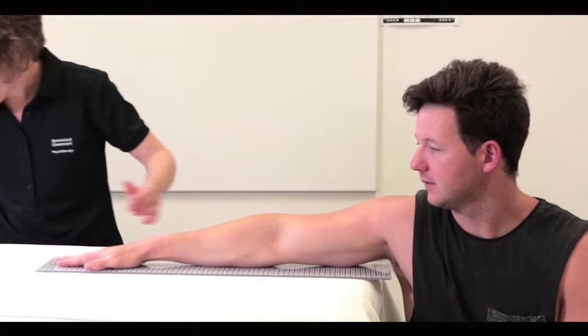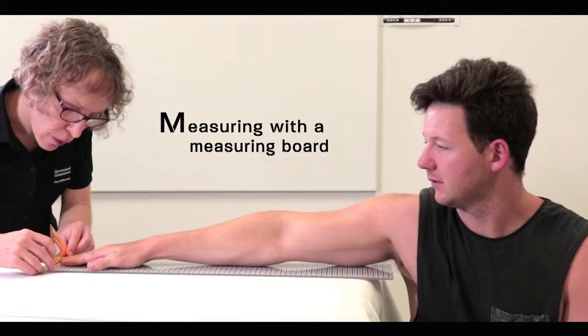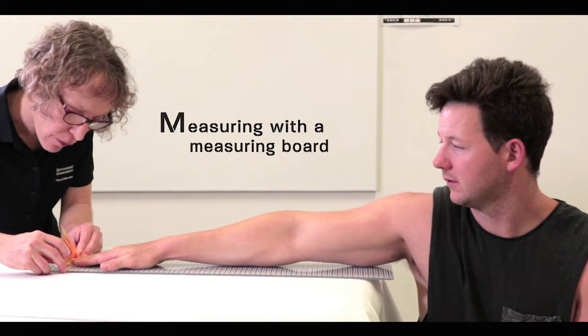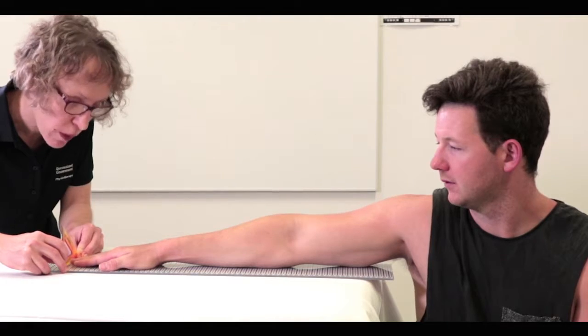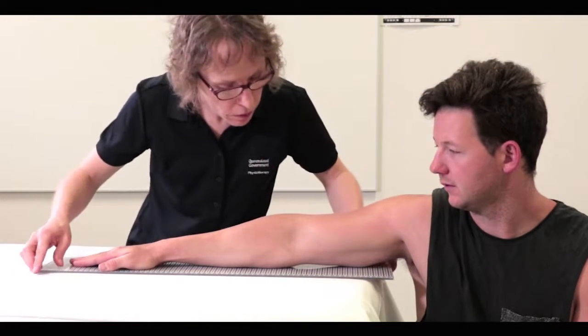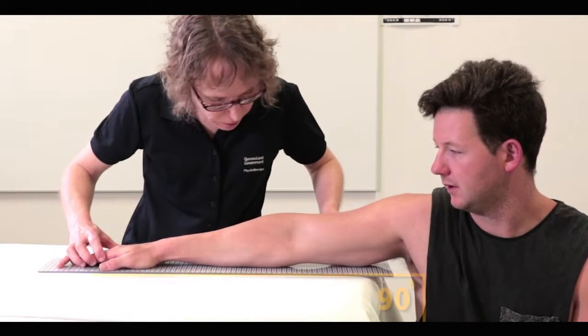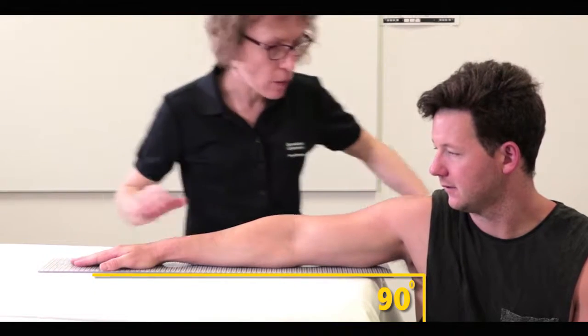I will demonstrate the measuring with a measuring board initially and without the use of a board later in the presentation. To measure the arm, the patient should be seated with their arm abducted to 90 degrees and resting on the board which is on a flat surface.